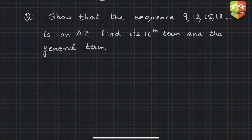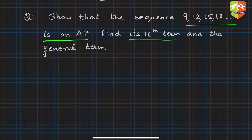Okay friends, so in this session we are going to take up some questions on arithmetic progression and its general term. The question says show that the sequence 9, 12, 15, 18 is an AP and find its 16th term and the general term. So how to solve this and how to show that any sequence is an AP?